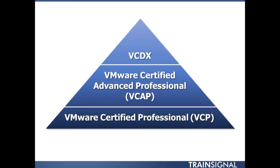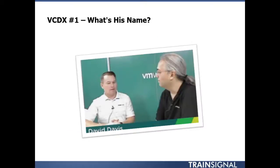Before covering each certification, I believe you should get to know the people who achieved those certifications before you. What about the very first VMware Certified Design Expert — VCDX number one? You can do a bit of research to find out his name. You'll find he has published books on cloud computing, is one of the authors of the VMware vCloud Architecture Toolkit (VCAT), speaks at VMworld, and is the guitarist in the VMware house band called Elastic Sky. Interestingly, VMware ESX stands for Elastic Sky X.